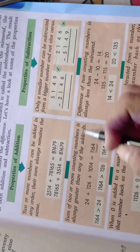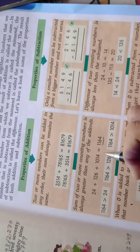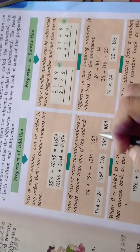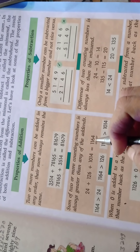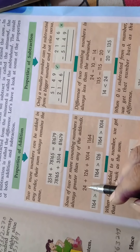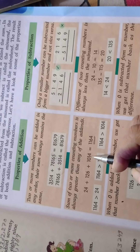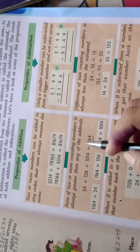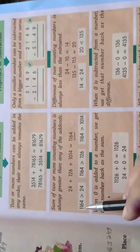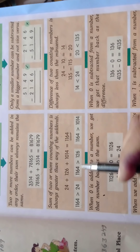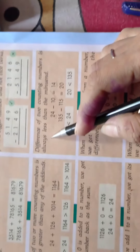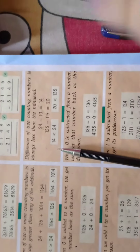Sum of two or more counting numbers is always greater than any of the addends. अगर आप तीन numbers को add करेंगे तो जो total sum आएगा वो सबसे बड़ा number कहलाएगा — यह greater than होगा सभी individual addends से।